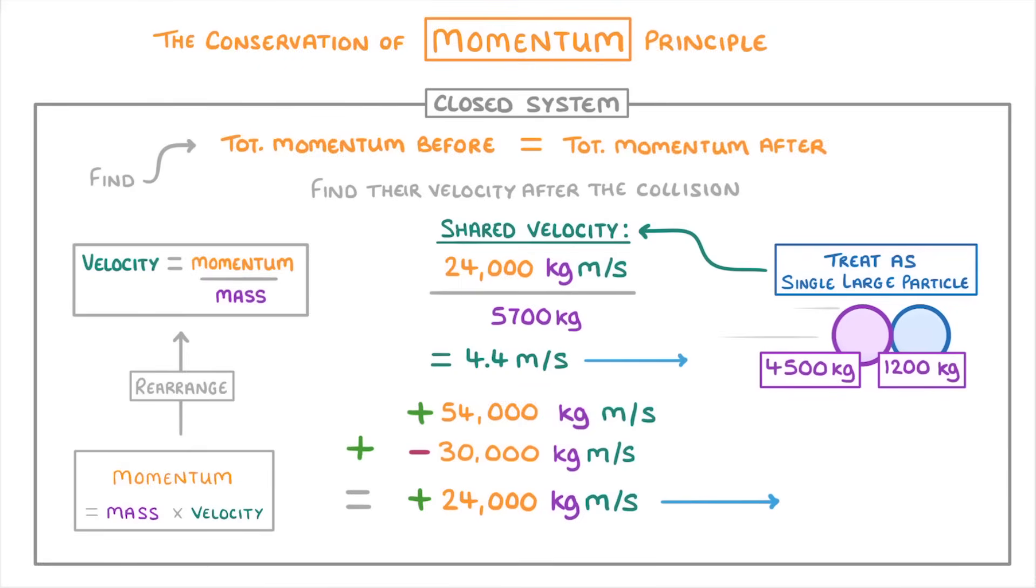So basically, after the dinosaur and the car collide, they'd both continue moving to the right at a velocity of 4.4 m per second.